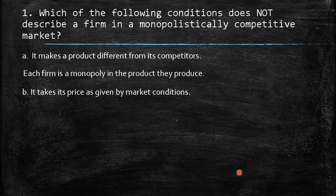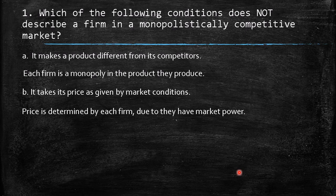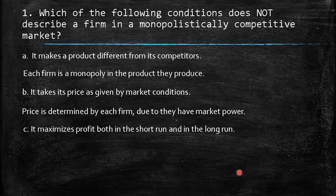Option B says it takes its price as given by the market. This should be the incorrect one, because in monopolistic competition, the price is determined by each firm — they have market power, which allows them to set the price they want to sell at. So the answer should be B.